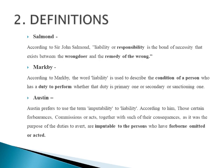According to Austin, he prefers to use the term imputability rather than liability. According to him, those certain forbearances, commissions or acts, together with such of their consequences as it was the purpose of the duties to avoid, are imputable to the persons who have formerly omitted or acted. Austin states that liability consists of those things which the wrongdoer must do or suffer because he or she has already failed in doing what was asked. It arises from the breach of duty, which may be in the form of an act or omission. According to Austin, liability is the ultimate purpose of law.